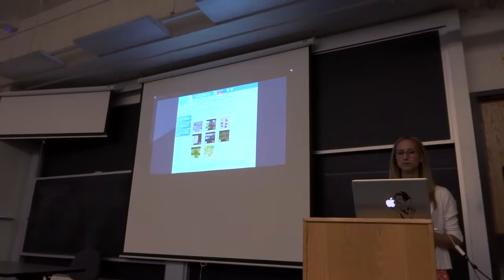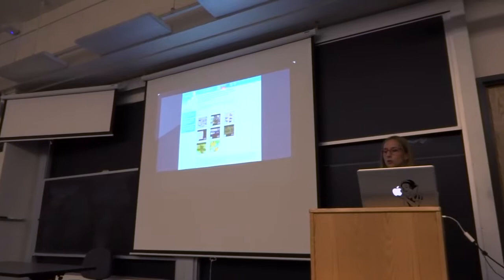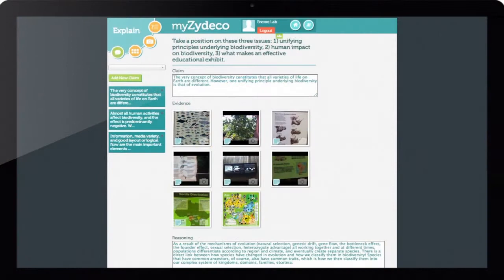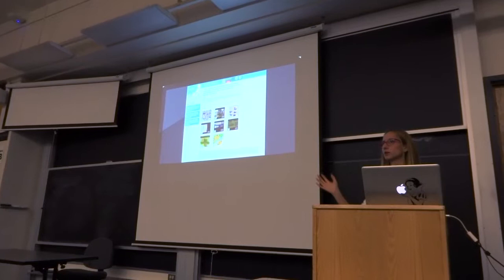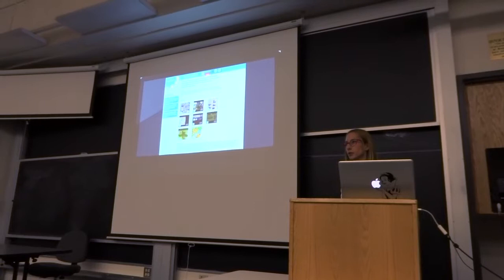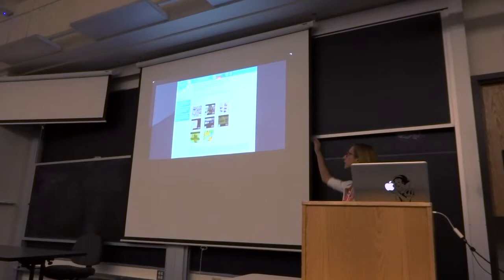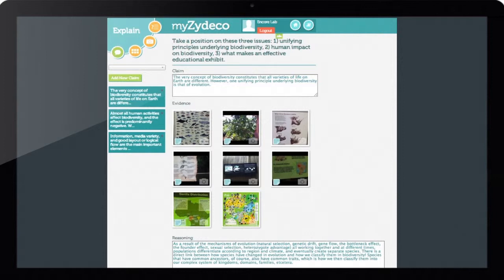When students returned from the zoo field trip, they were assigned to the task of creating claims statements, three claims statements in response to the three guiding questions that they had throughout the zoo field trip. Although the evidence was collected in groups and the shared evidence base reflected the contributions of everyone in the knowledge community, these claim statements were completed individually. The structure was guided by the Zydeco scaffold, a claim-evidence-reasoning structure. Students provided a claim statement to explain one of the unifying principles of biodiversity. They chose evidence based on the shared evidence base. They used evidence to support their claim statement. And then in the reasoning portion, they had to explain how that evidence supported their claim statement.